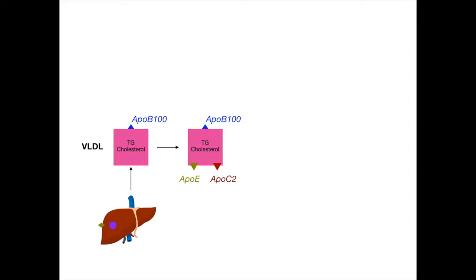So APO-E and APO-C2 appear on VLDL. At this point, VLDL has three apolipoproteins on it: APO-B100, APO-E, and APO-C2. Recall from the previous video that the role of APO-C2 is to activate LPL to hydrolyze and convert triglycerides to fatty acids for absorption. The APO-C2 on VLDL carries that same exact function.